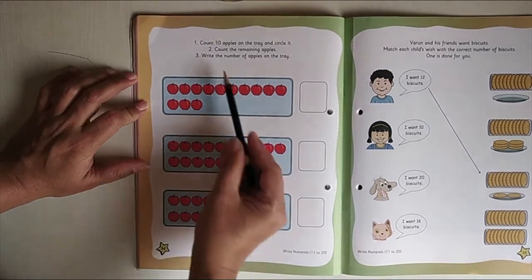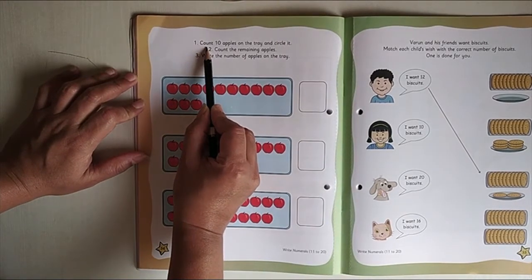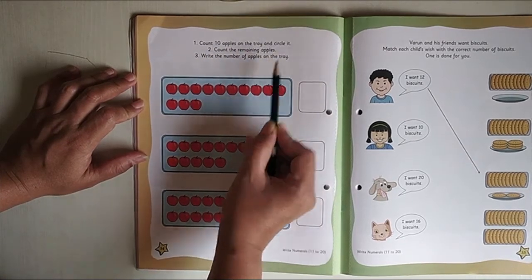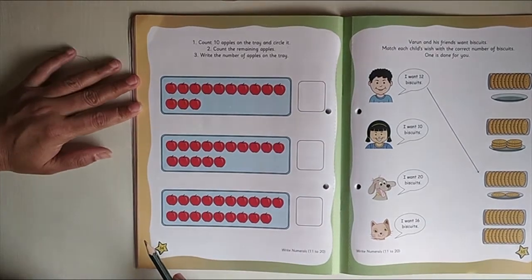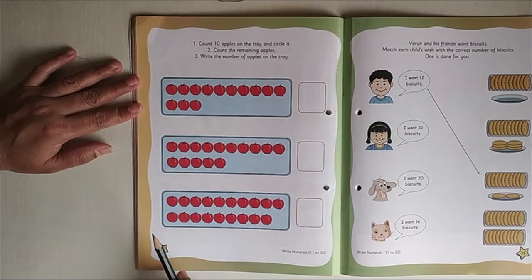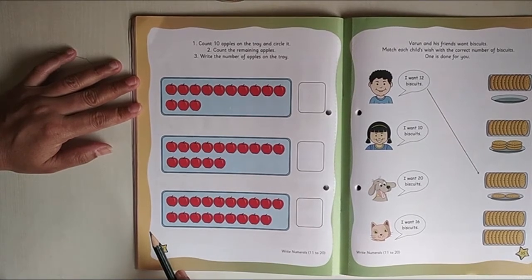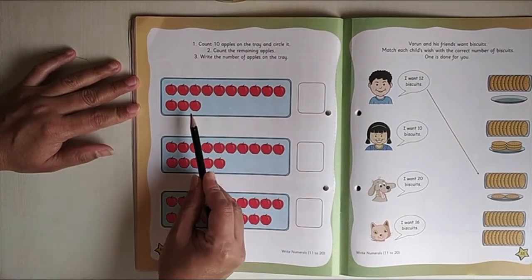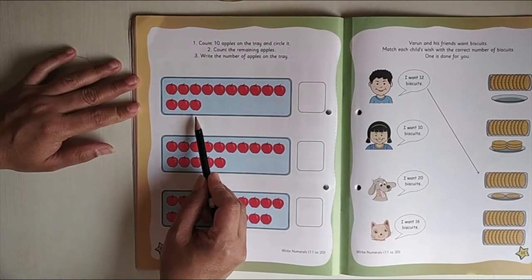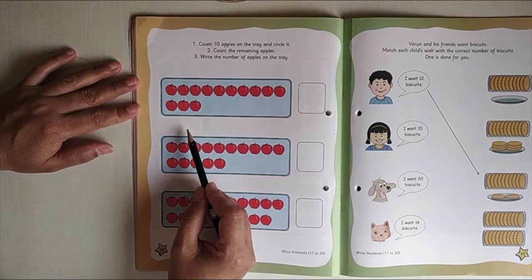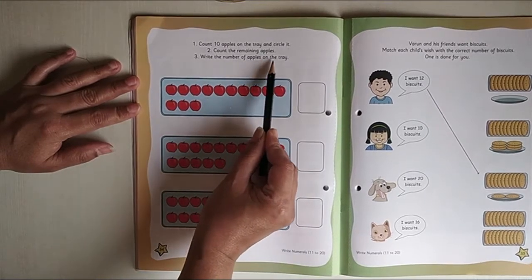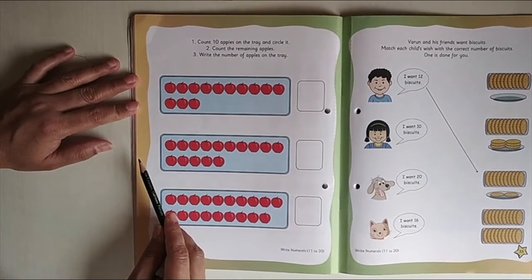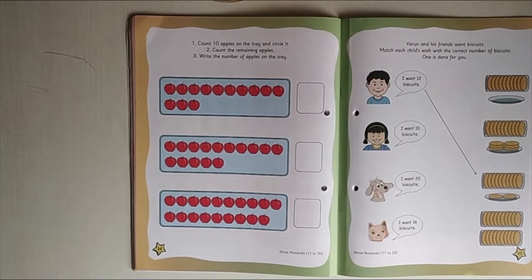Now the instructions given here are count 10 apples on the tray and circle it. So what we are going to do is first we are going to count the apples, 10 apples. We are going to count only 10 apples and we are going to circle them. Count the remaining apples. So after circling we are going to count the remaining apples. Now write the number of apples on the tray. They have given a special small tray over here where we can write the number.